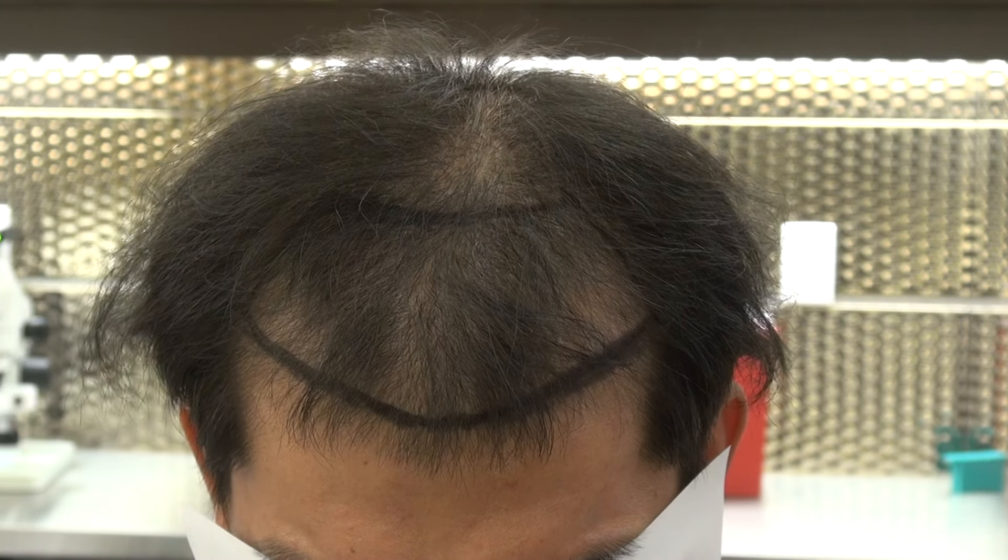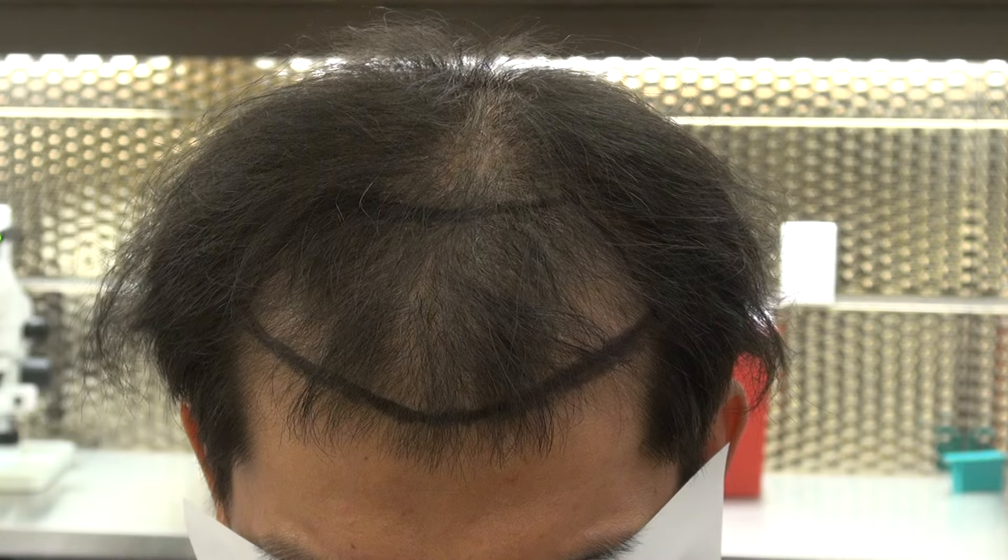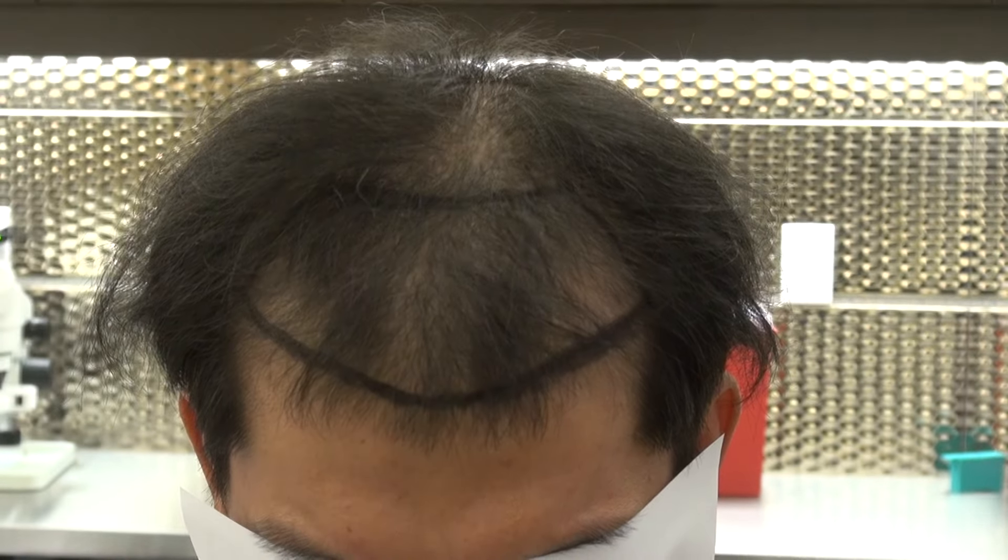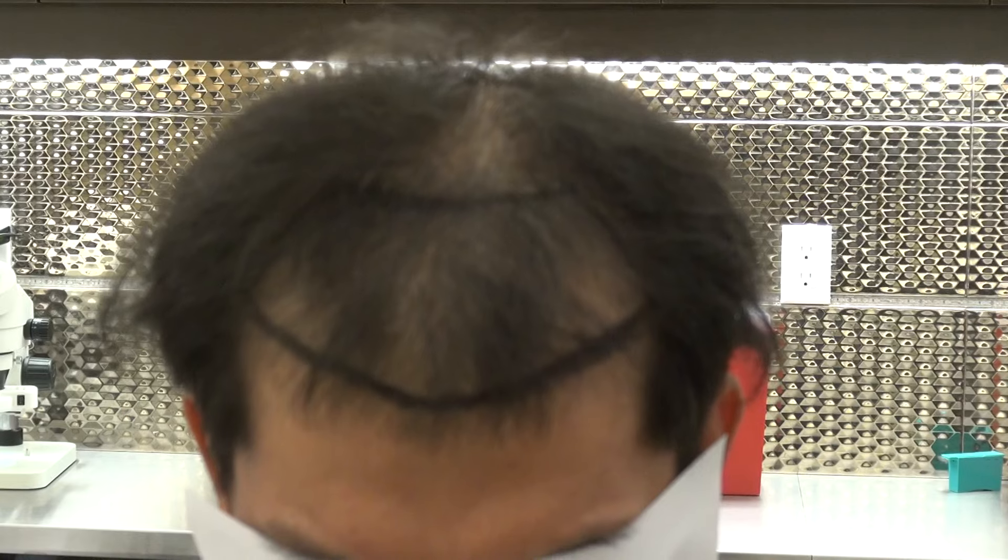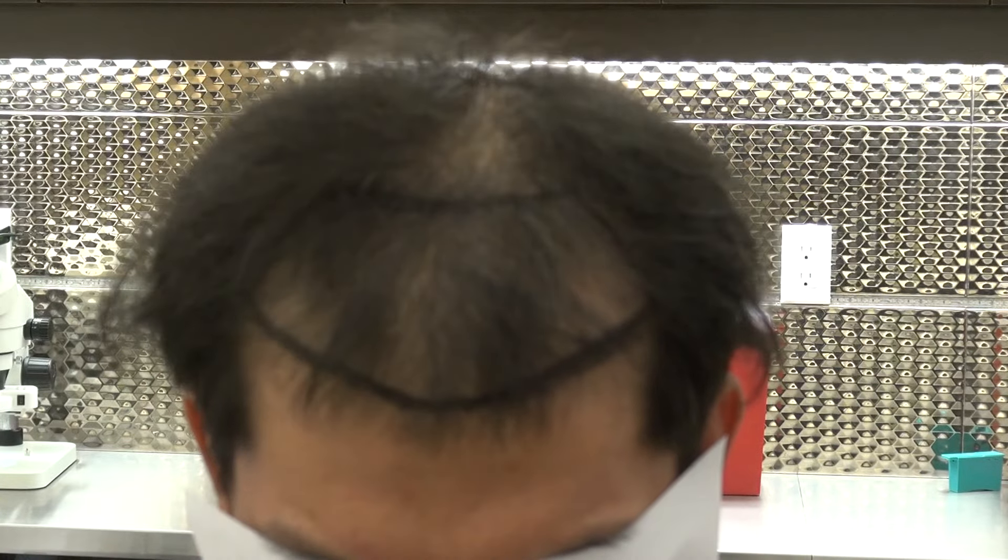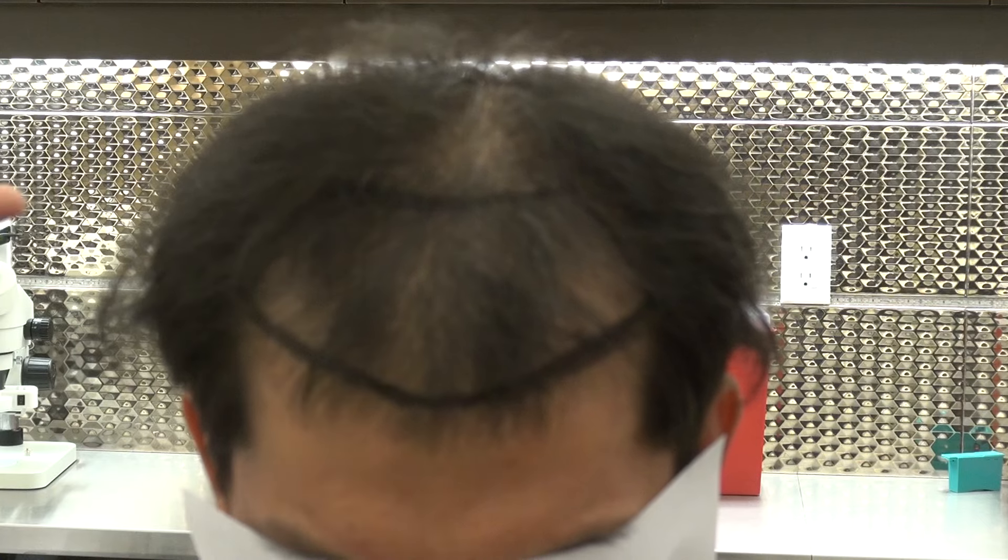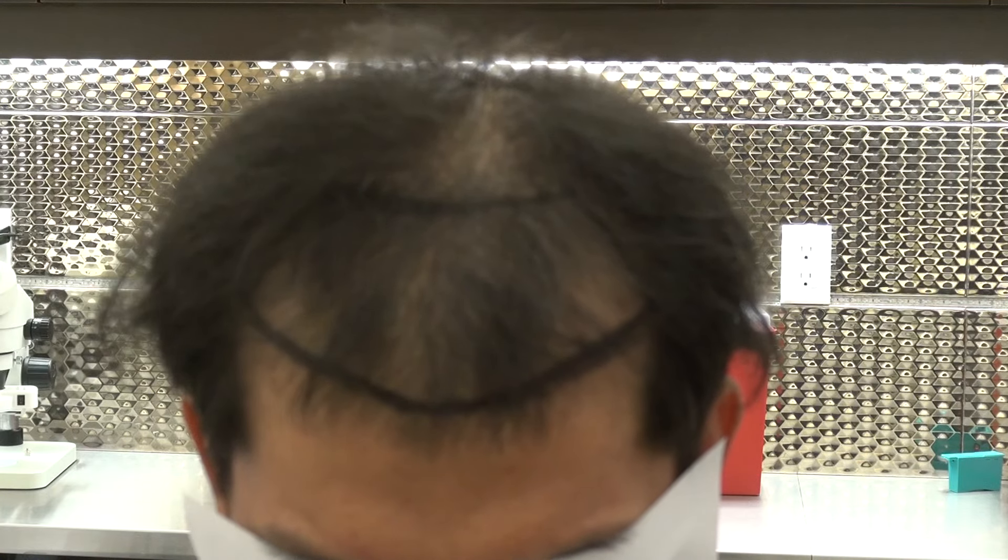This client needs more than 2,500 grafts, but that's all we can do in one session. The 2,500 grafts will cover the front—almost the front half, maybe front third—and we'll build that area and increase density. While the strip method leaves you a linear scar, FUE leaves minimal scarring.